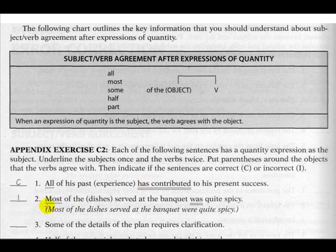Next: 'most' is the subject, 'dishes' is the object. Dishes is plural, so the verb needs to be plural. 'Most of the dishes served at the banquet were quite spicy' — were is plural, which is correct.